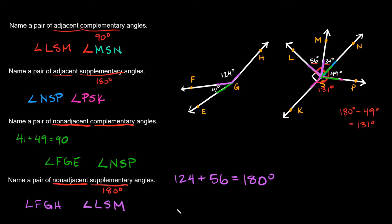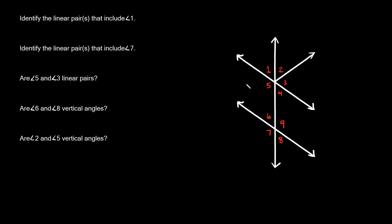Hopefully those weren't too bad. Let's try one last example. Here's the last figure. This one says: identify the linear pair or pairs that includes angle 1. Angle 1 is right here. Remember, linear pairs are two angles next to each other that are supplementary — they add up to 180 degrees, and they always occur where there are straight lines. So angle 1 and angle 5 would be a linear pair because they're next to each other and supplementary.